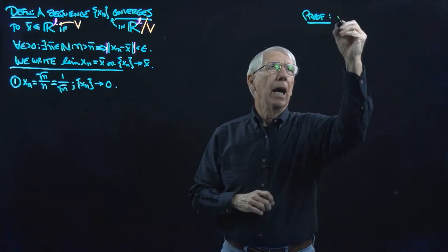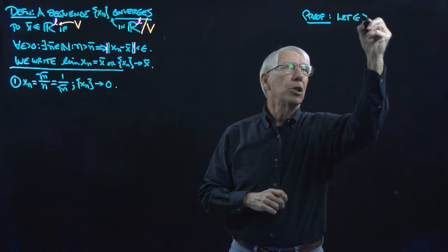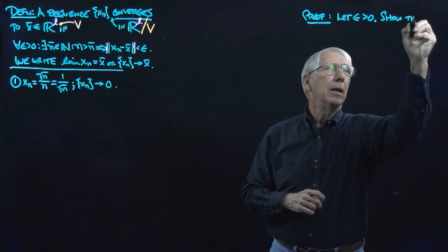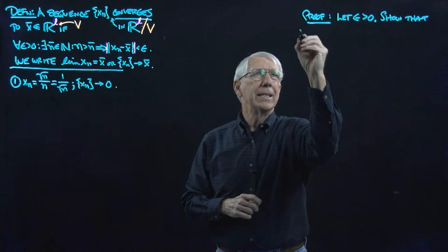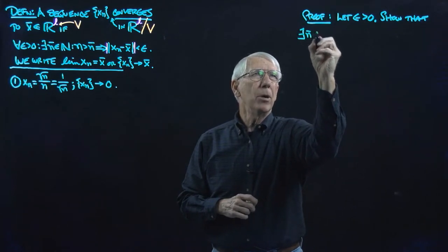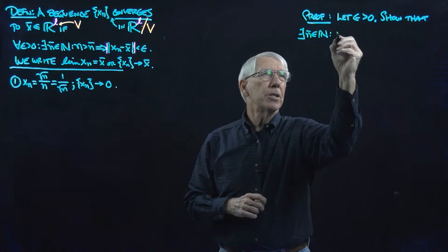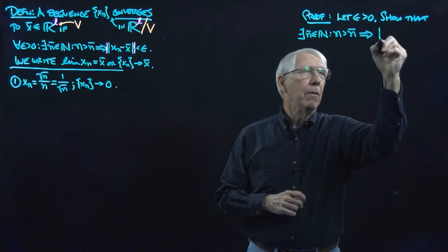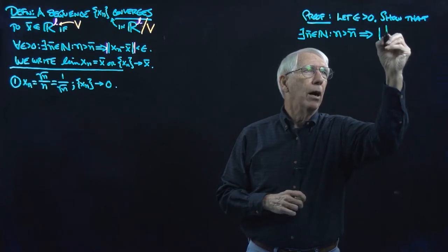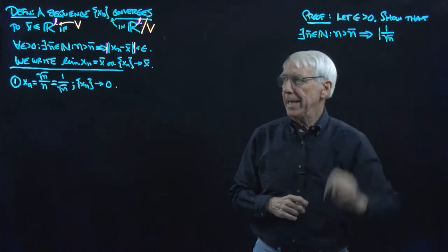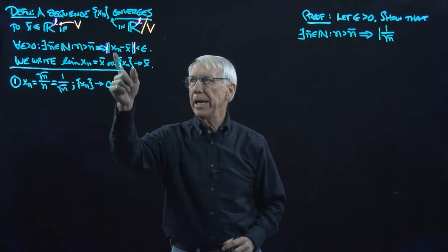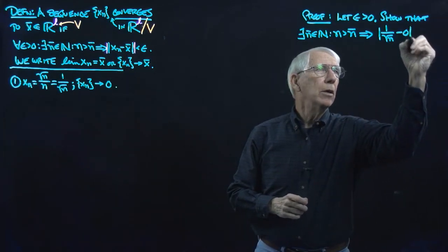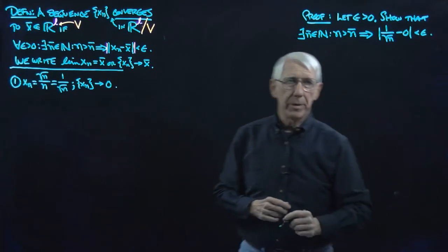And we need to show that there exists an N̄ in N such that n greater than N̄ implies that the absolute value of 1 over the square root of n — because that's what's playing the role of x_n — minus zero, is less than epsilon. That's what we have to show.